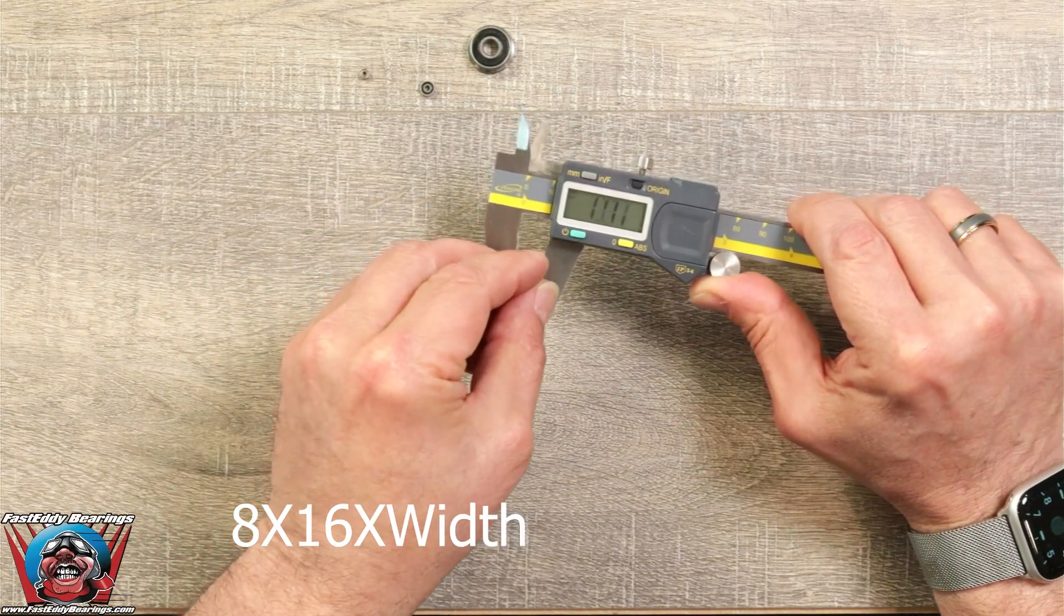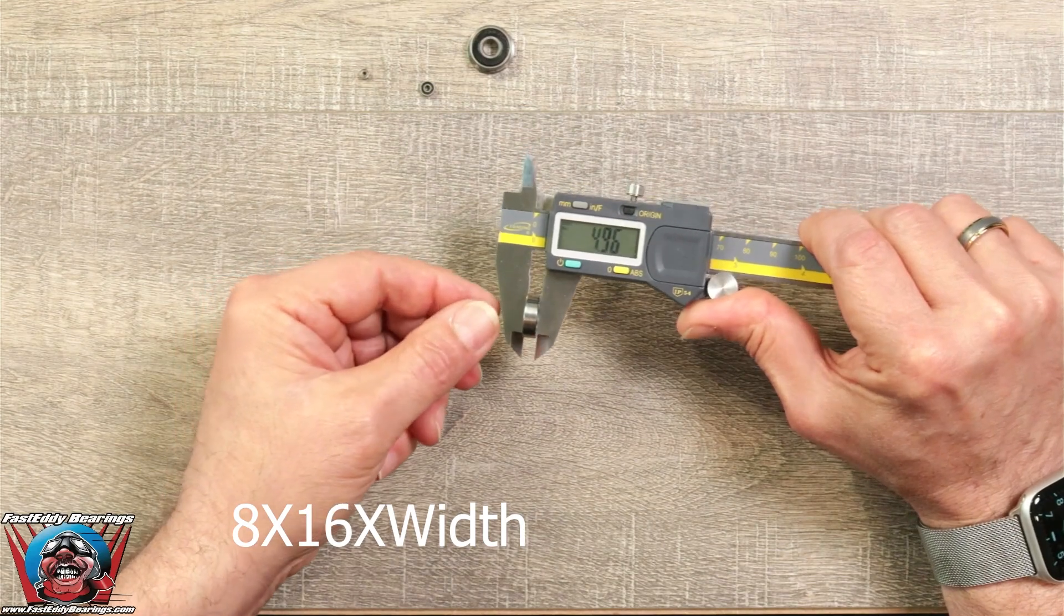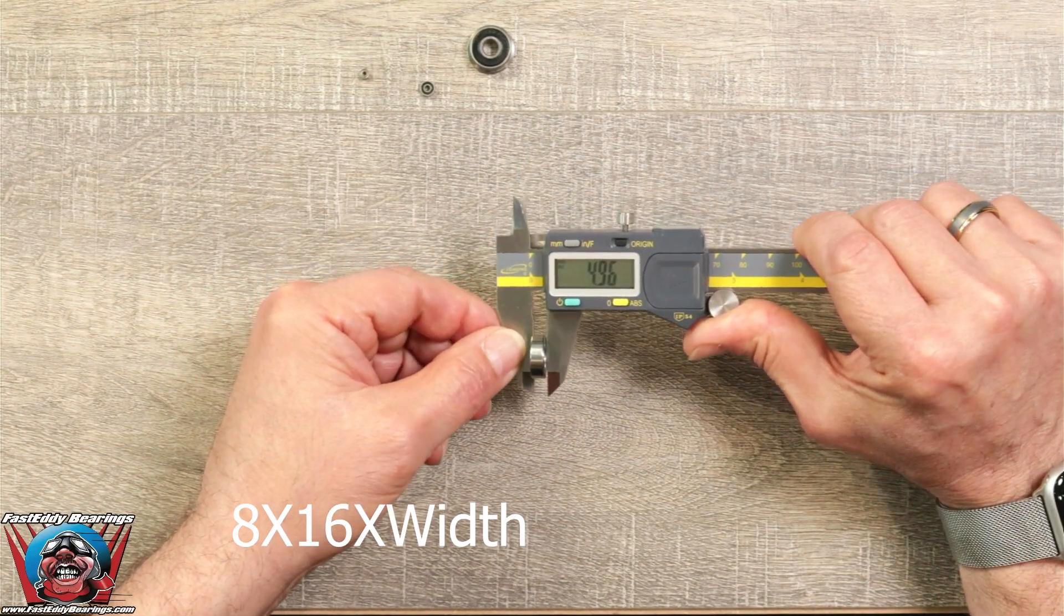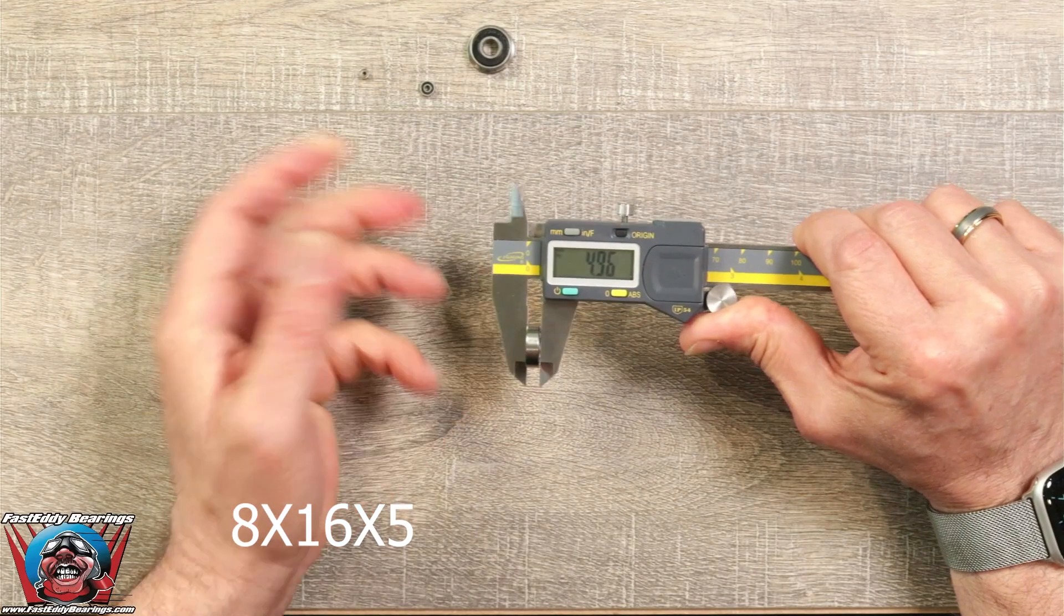And next will be the width of the bearing. So this is an eight by 16 by five. Very simple.